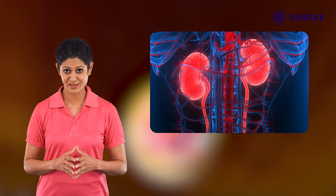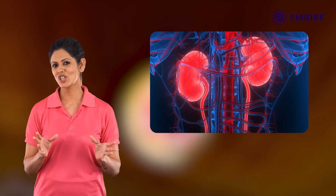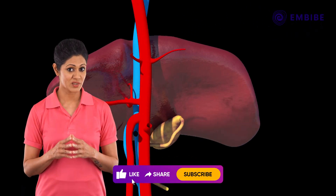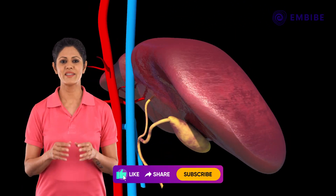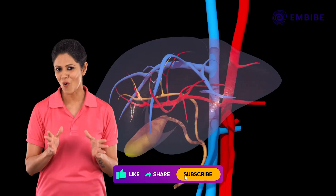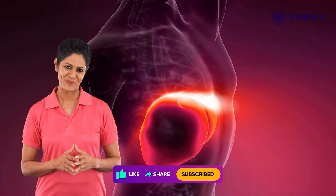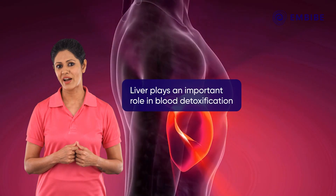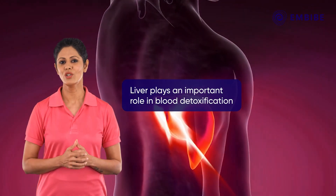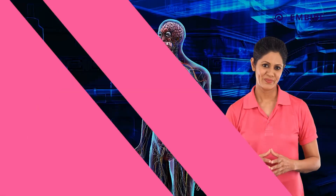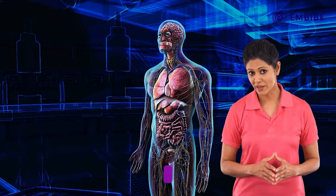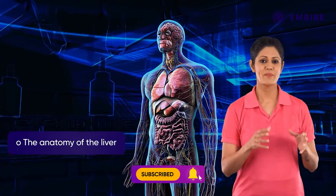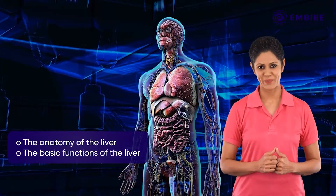The excretory system is not just about the kidneys and the skin. Numerous toxic substances are rendered harmless by a master organ called the liver. The liver takes an initiative in detoxifying the blood. Watch this video to know how it happens. In this topic we will learn about the anatomy of the liver and the basic functions of the liver.